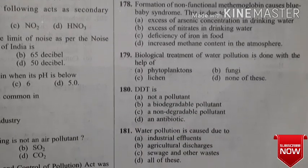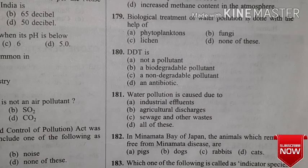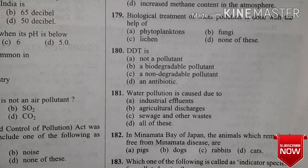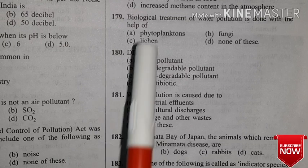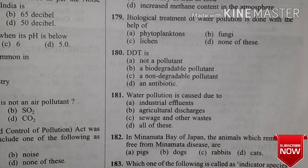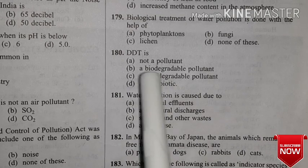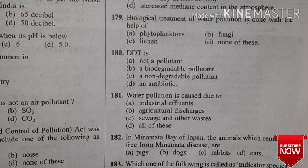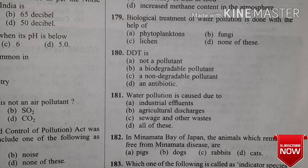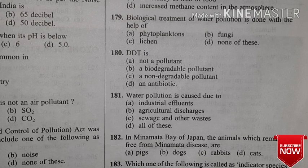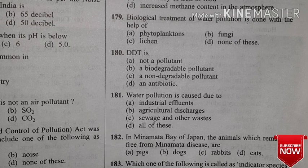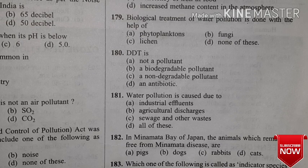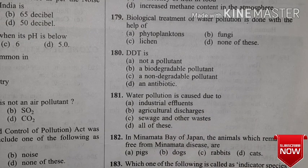Question 179: Biological treatment of water pollution is done with the help of which organisms? Check the options including phytoplankton. Please give the correct answers for B, C, and D.